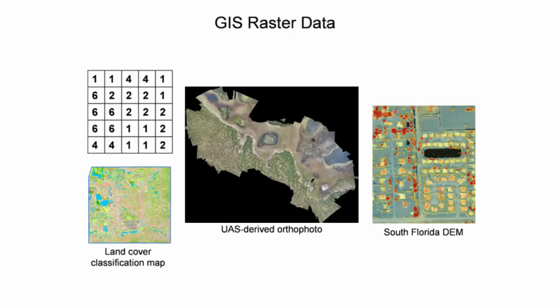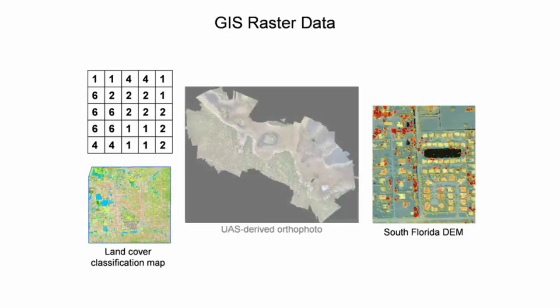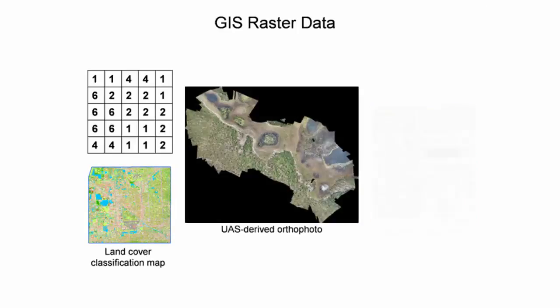GIS raster data consists of cells that are organized into rows and columns where each cell contains a singular value representing one piece of information. The value could represent data along a continuum, such as elevation, or a particular feature type in a classified map. Examples of raster data include land cover classification maps, orthophotos, and digital elevation models.